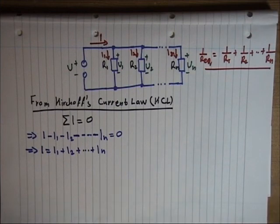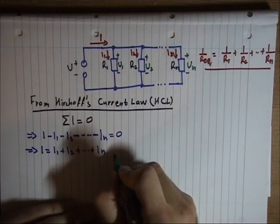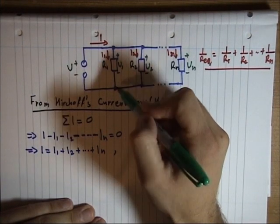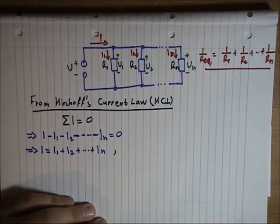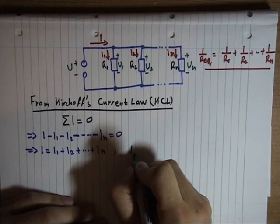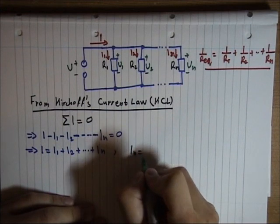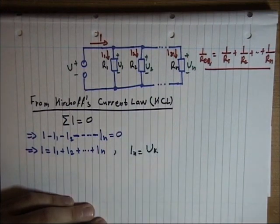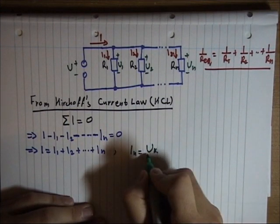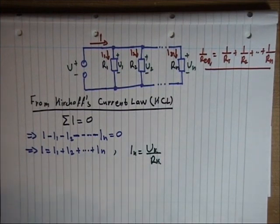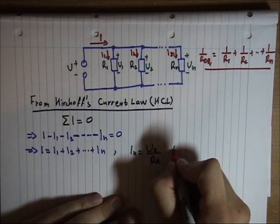We know that the current of each individual element is equal to the voltage of that element over its resistance. This is another form of Ohm's law.